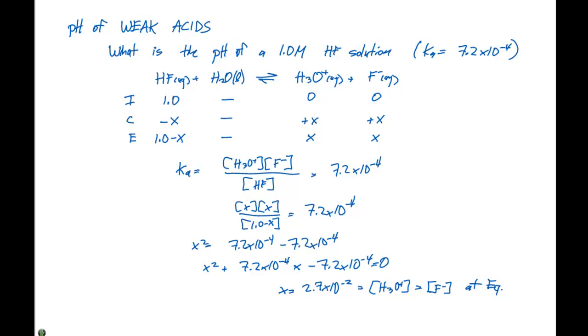So to calculate the pH, we need this value. We'd go with the negative log of H3O plus. And our pH is gonna equal the negative log of 2.7 times 10 to the minus 2, which is gonna equal 1.6.